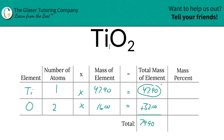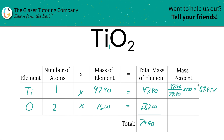So to find the mass percent of titanium, take the total mass of that titanium — 47.90 units of mass — divided by the total mass of the compound, 79.90, multiply it by 100. That is a simple percent calculation: part over whole times 100. And that's going to work out to be about 59.95%.